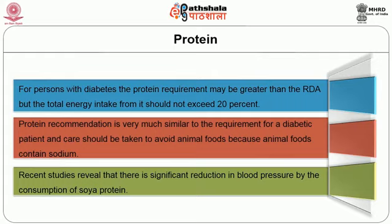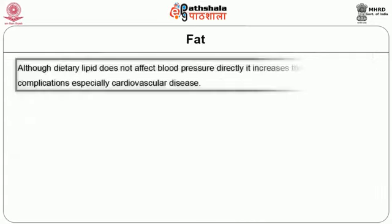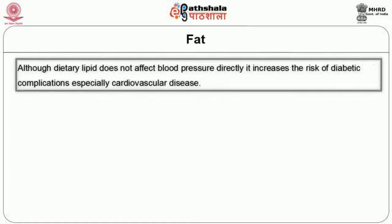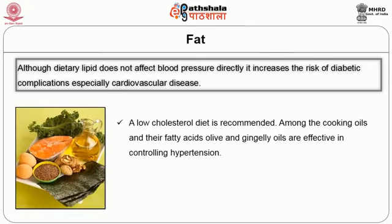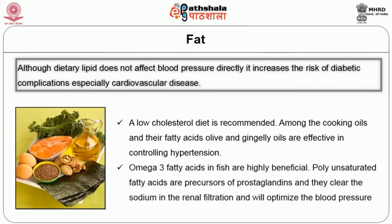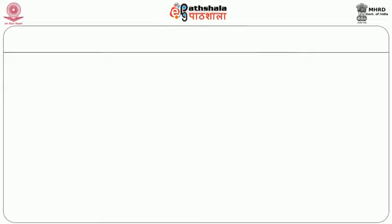The next nutrient is fat. Among cooking oils, olive oil and sesame oils are effective in controlling hypertension. Olive oil is a very good anti-hypertensive agent because it contains a high amount of polyphenols. Omega-3 fatty acids in fish are highly beneficial and help maintain good cholesterol. Polyunsaturated fatty acids are precursors of prostaglandins and therefore help clear sodium in the renal filtration, thus optimizing blood pressure.